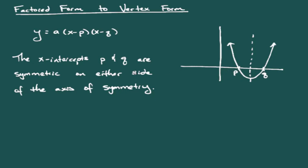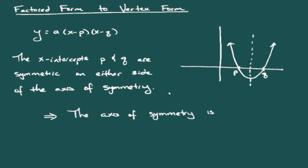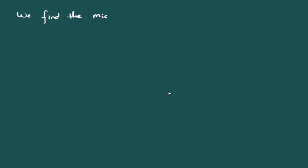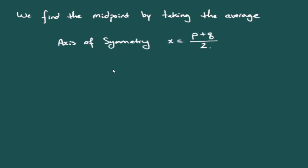The important thing to remember when converting from factored form to vertex form is that the x-intercepts are symmetric on either side of the axis of symmetry — the same distance to the right as to the left. So if we know the x-intercepts, the axis of symmetry is the midpoint between them, found by adding the two values p and q together and dividing by two.